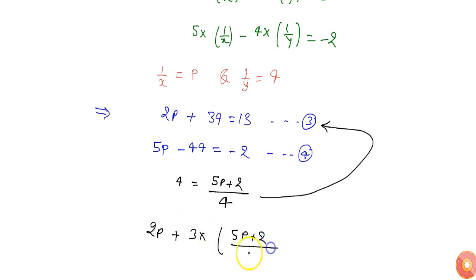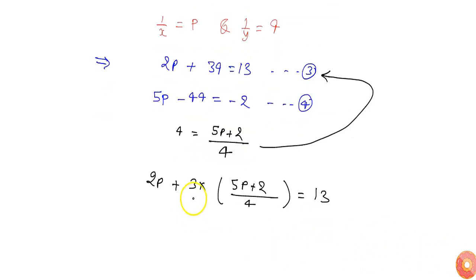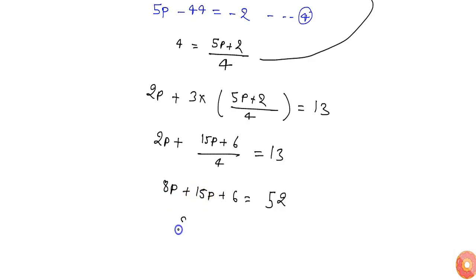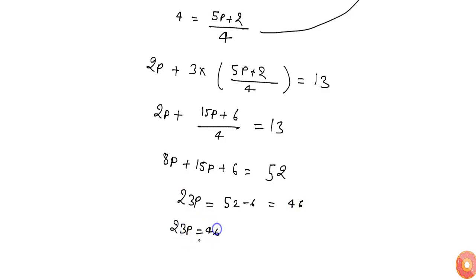If I put the value of q in equation number 3, I will get 2p plus 3 into (5p plus 2)/4 equals to 13, which gives 2p plus (15p plus 6)/4 equals to 13, so 8p plus 15p plus 6 equals to 52. Therefore 23p equals to 52 minus 6, which is 46, so p equals to 46/23, which is 2.